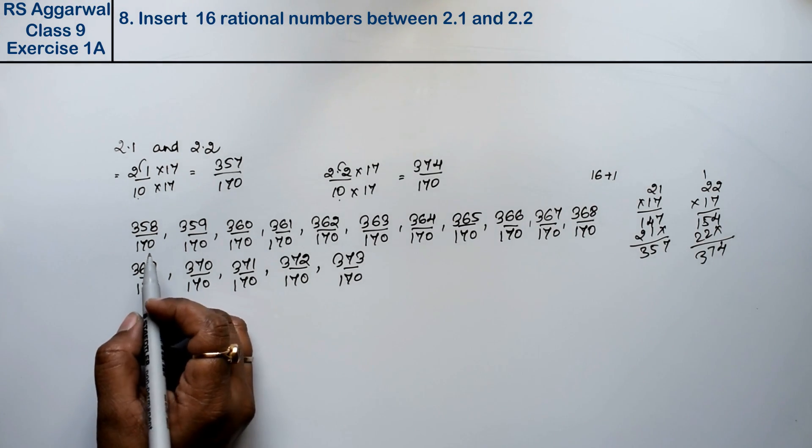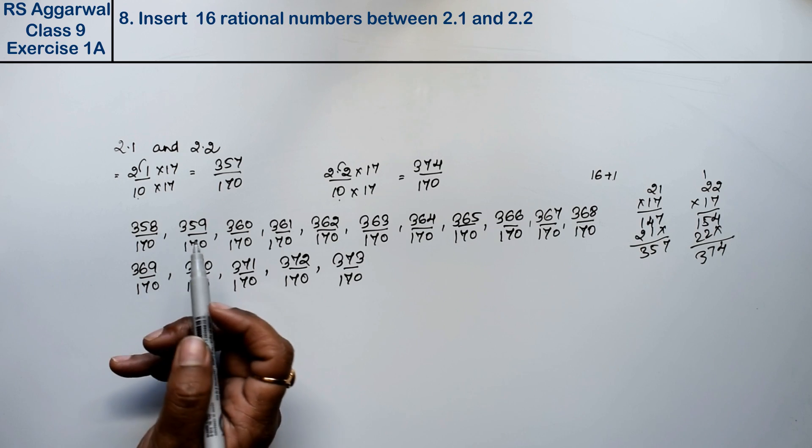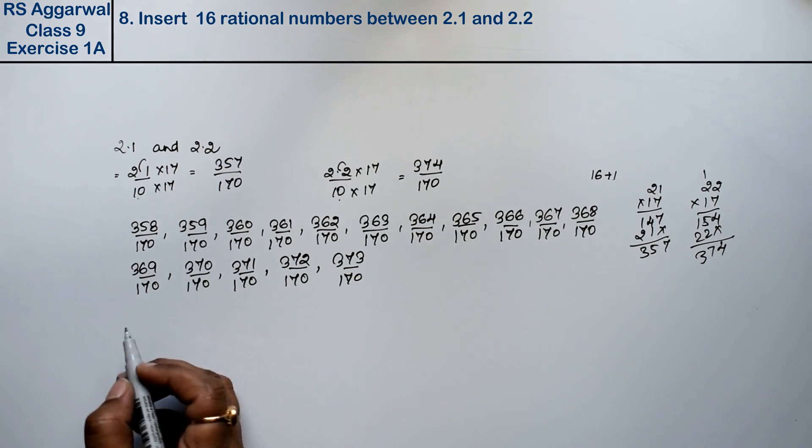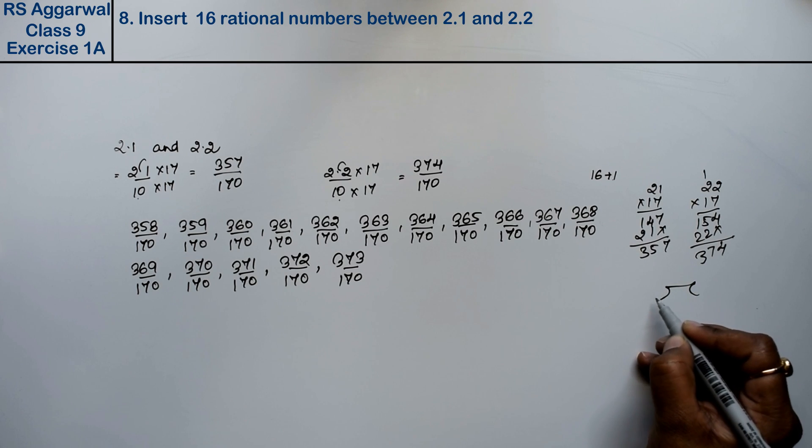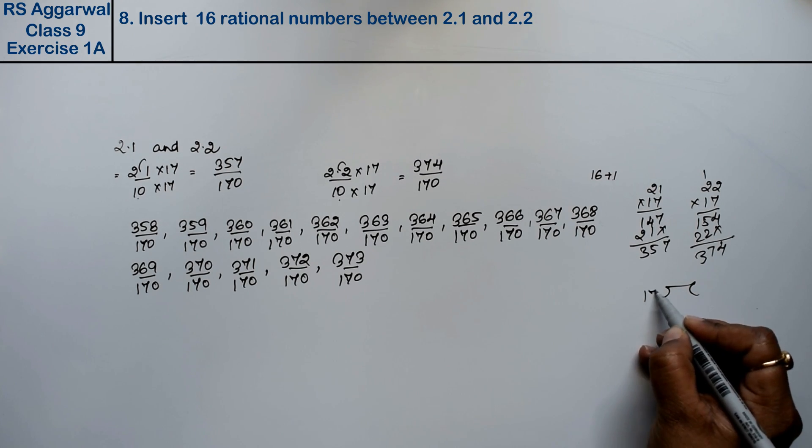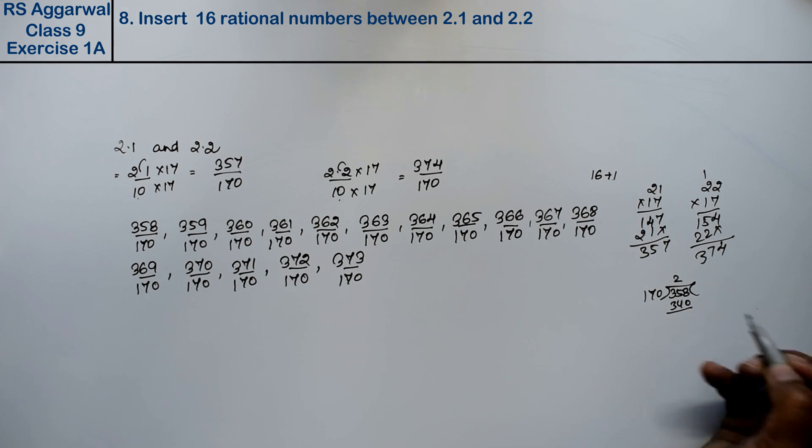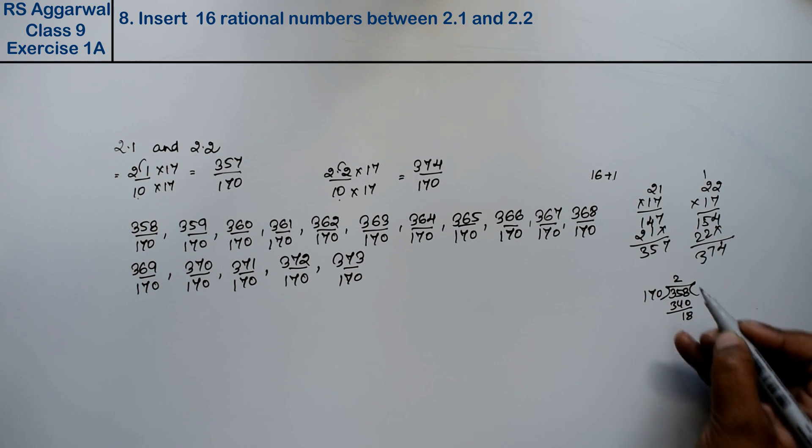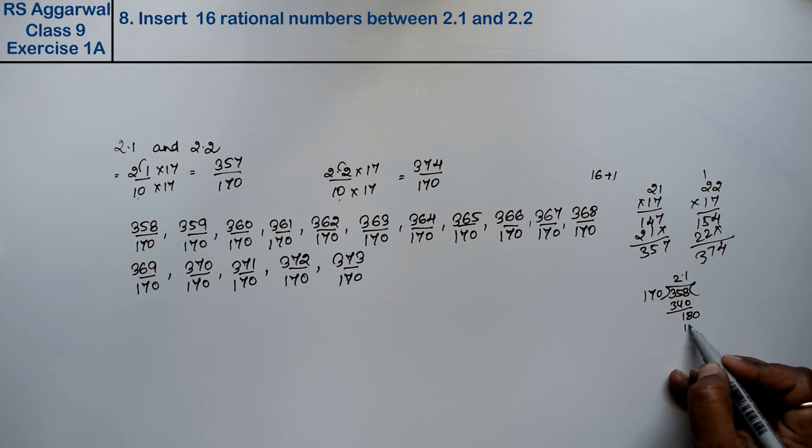Right? Now, if you want to divide it, you can leave it here. In exams, you can leave it here. But I will say, if you have time, please divide it. Because there are very big values. So divide it. It's not an easy task. Let's see, this is 357 divided by 170.